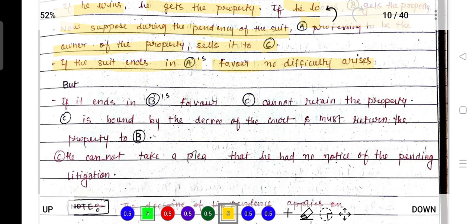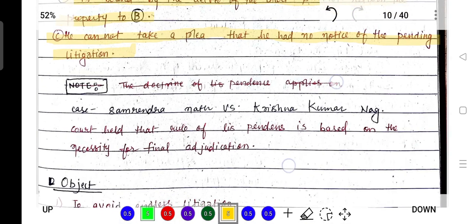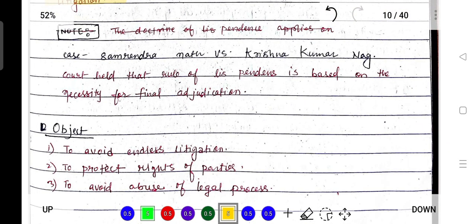If the suit is decided in A's favor, no difficulty arises. But if the suit is in B's favor, C cannot retain the property. C is bound by the decree of the court and must return the property to B. C cannot take a plea that he had no notice of the pending litigation.